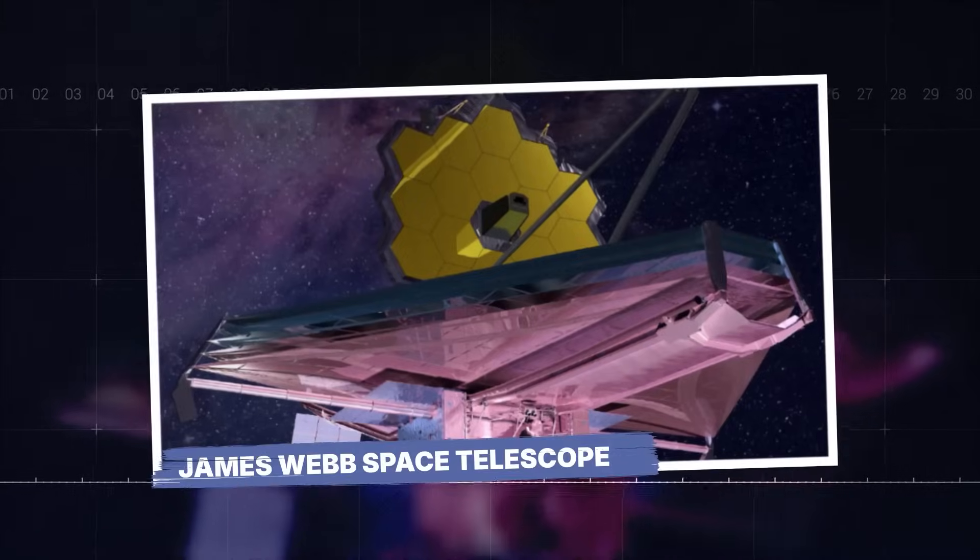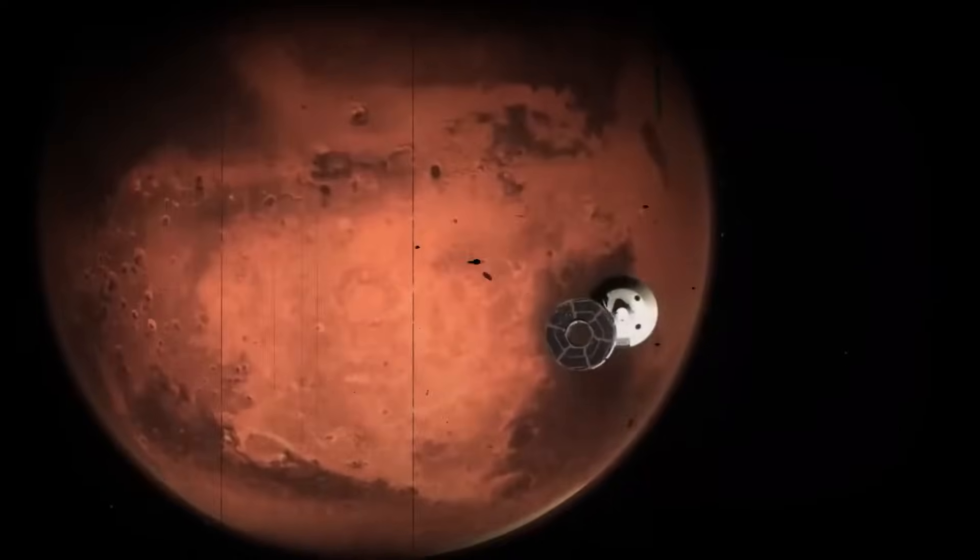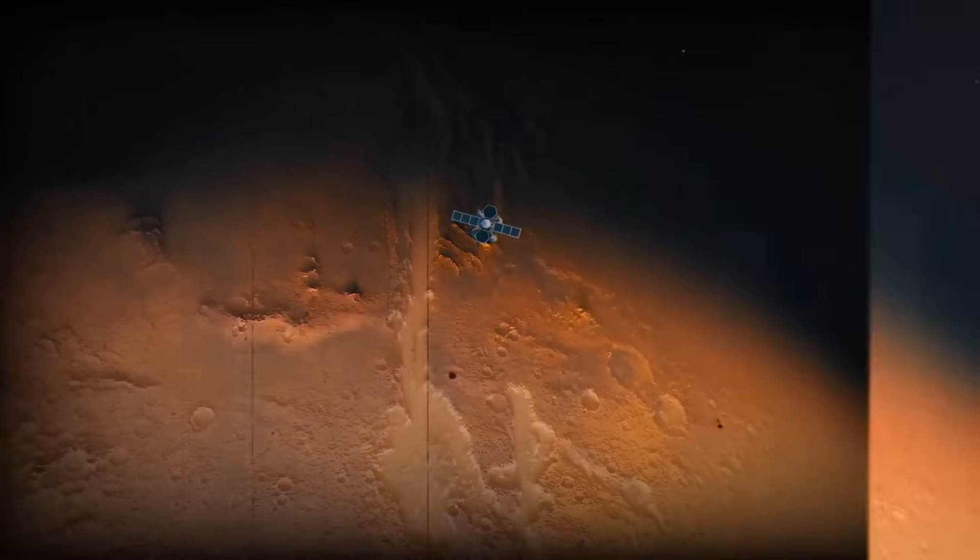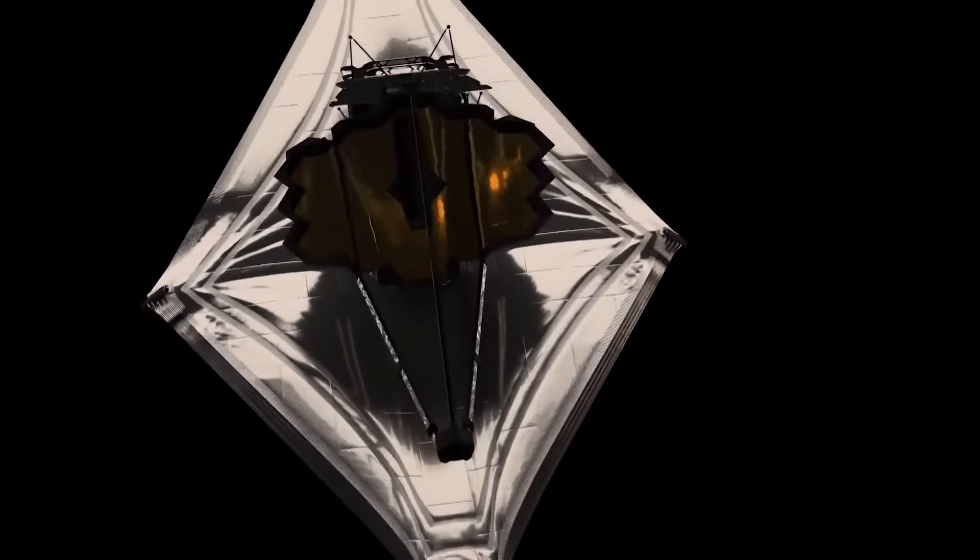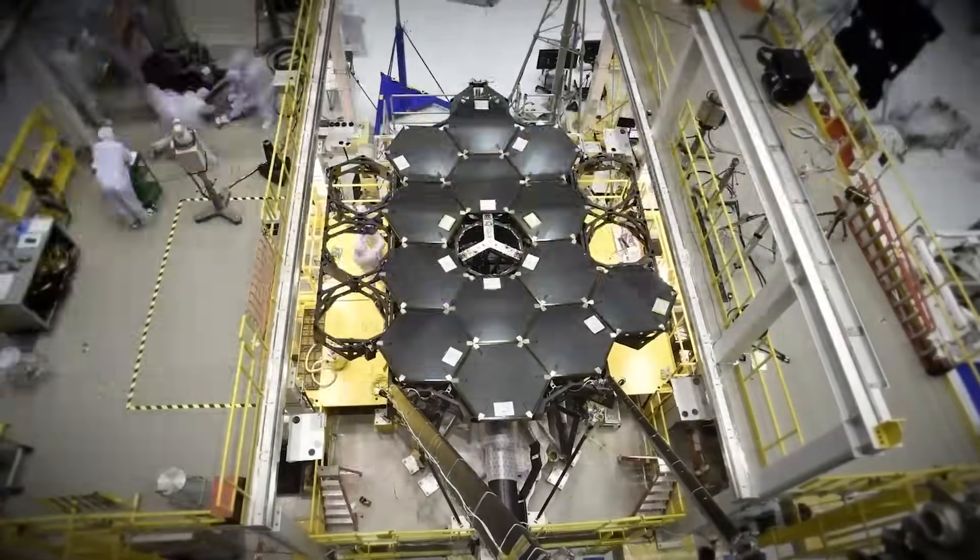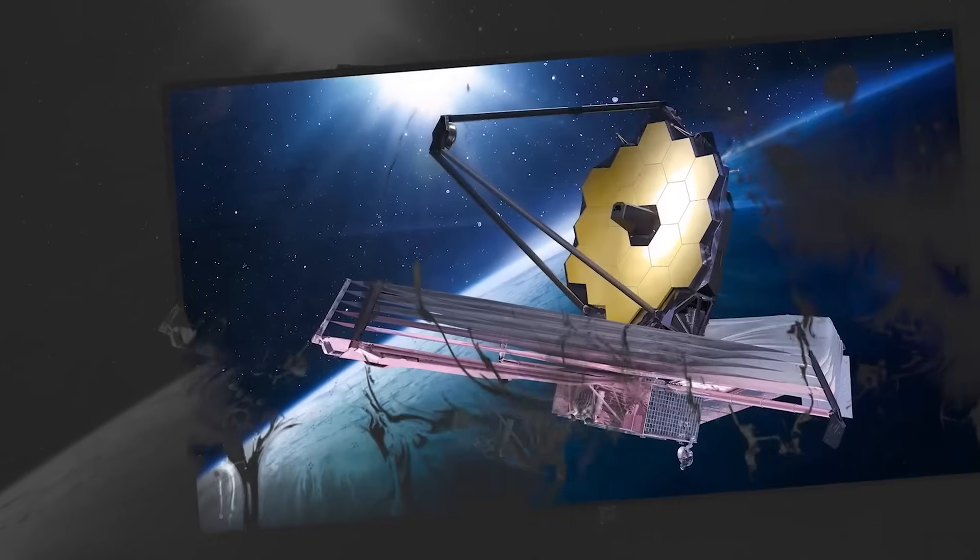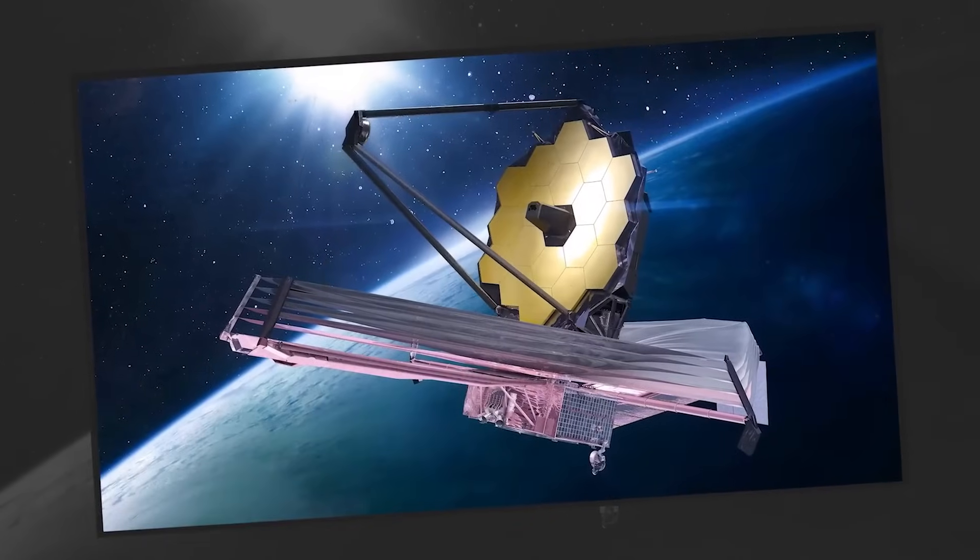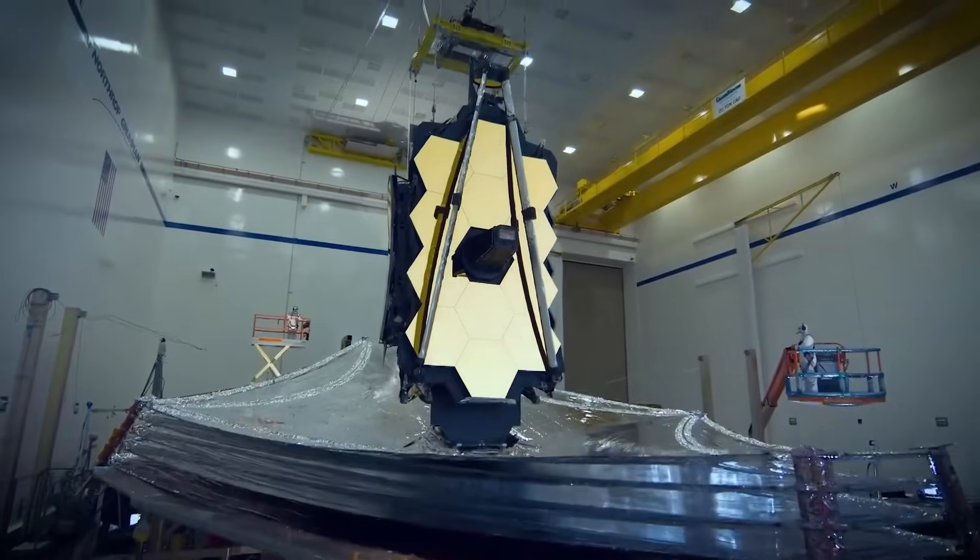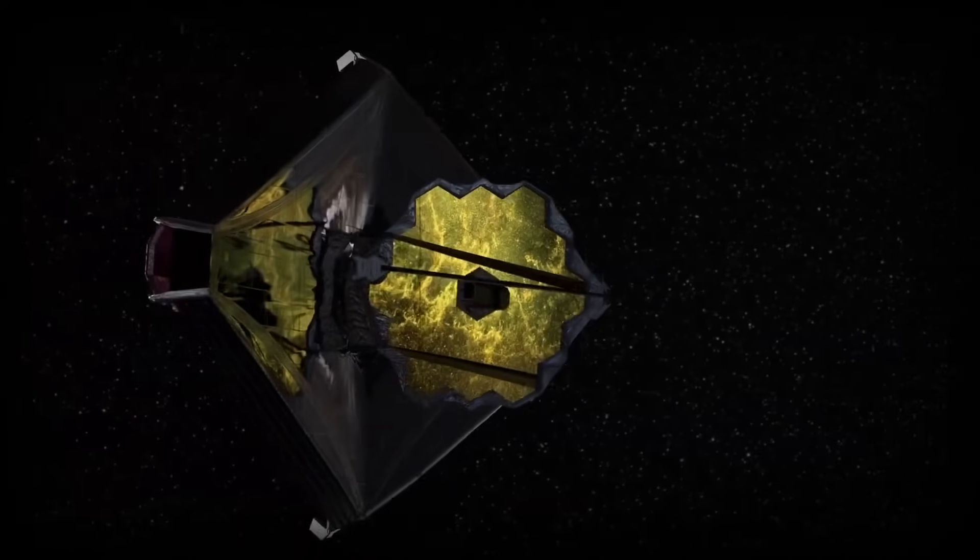James Webb Space Telescope. The game-changer in the search for a second Earth didn't come in the form of a spaceship—it came with a golden mirror gliding through space. Launched in December 2021, the James Webb Space Telescope has quickly become the sharpest eye humanity has ever turned toward the stars, and what it's seeing is nothing short of incredible.